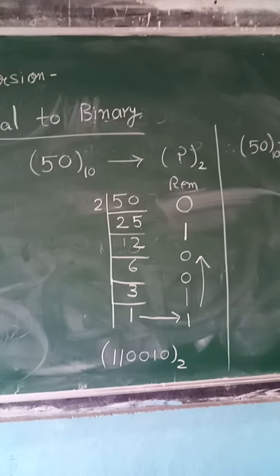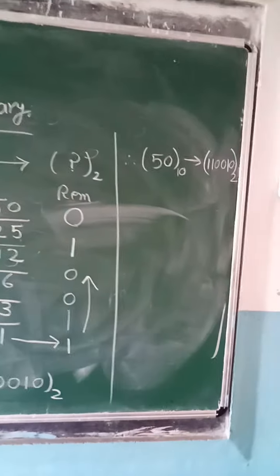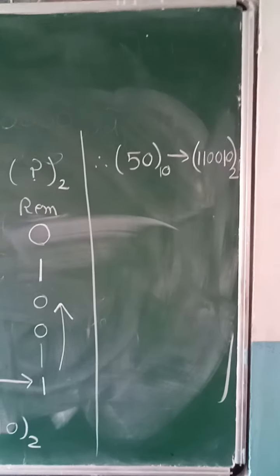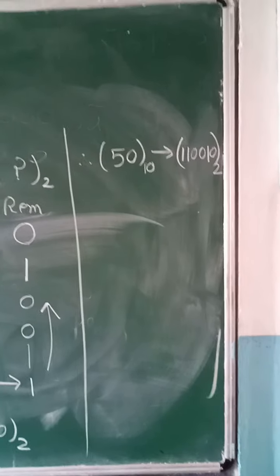Now it is converted into binary number system. So in last you will write 50 base 10 converted into binary number system.